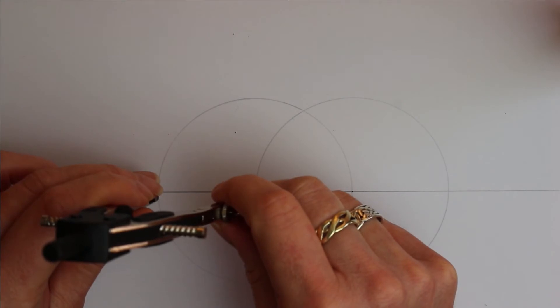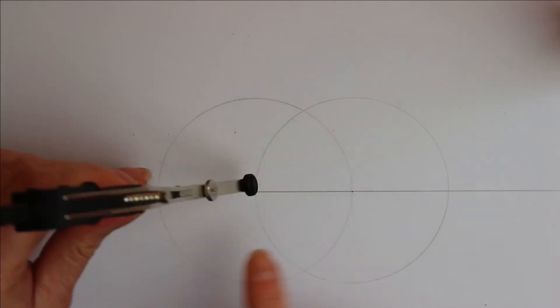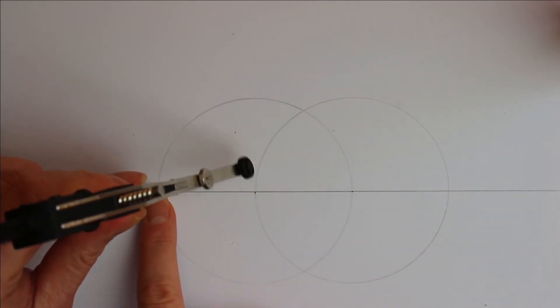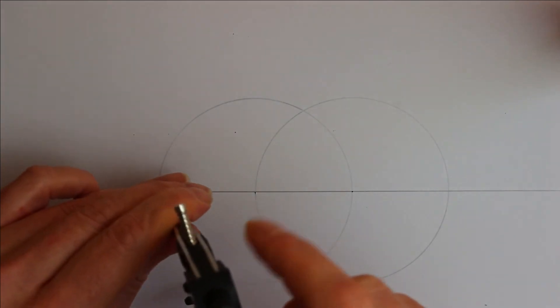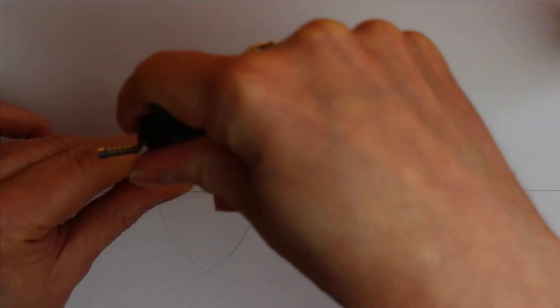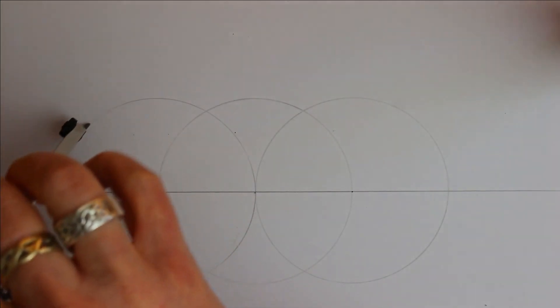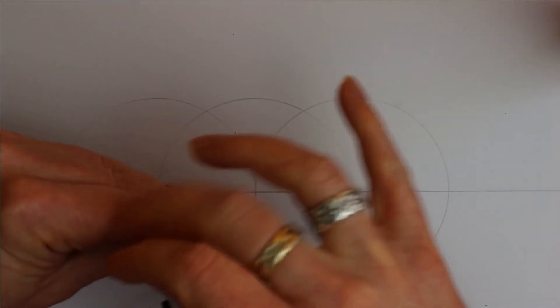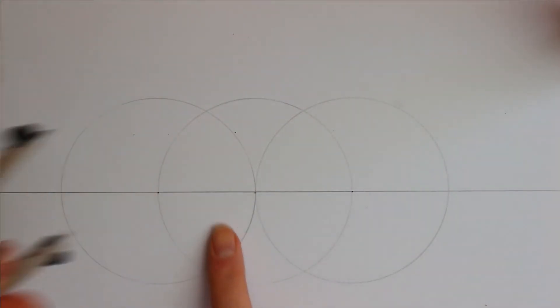So now we have two overlapping circles. What we want to do now is just to do another where the line crosses the edge of the first circle. Swing the compass round. So now we have one, two and three overlapping circles.